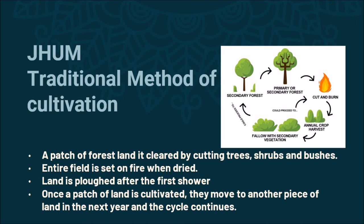You can see the process of Jhum cultivation in the diagram, which shows the complete cycle. First, a patch of forest land is cleared by cutting trees, shrubs, and bushes. Then the entire field is set on fire when dried. The land is ploughed after the first rains. Once a patch of land is cultivated, they move to another piece of land the next year, and the cycle continues.